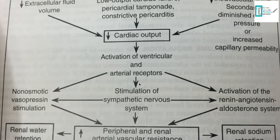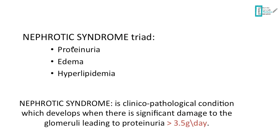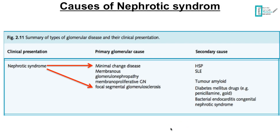Here is a summary of what I have talked about so far. If the patient develops proteinuria, edema, and hyperlipidemia, this triad is what we call nephrotic syndrome. Nephrotic syndrome is a condition which develops when there is significant damage to the glomeruli, leading to proteinuria with a quantity of more than 3.5 grams per day.